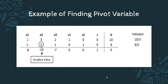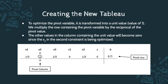Now that we have the pivot variable identified, we can create the new tableau. To optimize, we transform the pivot variable into a unit value of 1 by multiplying the row containing the pivot variable by the reciprocal of the pivot value — in this case, 1 over 5. The other values in the pivot column become 0, since x2 in the second constraint is being optimized.